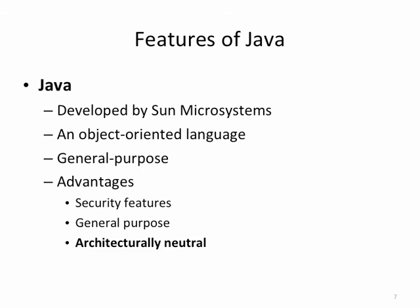Java is also architecturally neutral, meaning it can run on pretty much any computer. For example, a backup camera in your car is probably running Java, a microwave with a popcorn button that figures out when the popcorn is done is probably running Java, and a refrigerator that senses whether the ice cream is melting is also probably running Java. Java runs on a wide variety of machines — it's architecturally neutral, and not many programming languages do that.